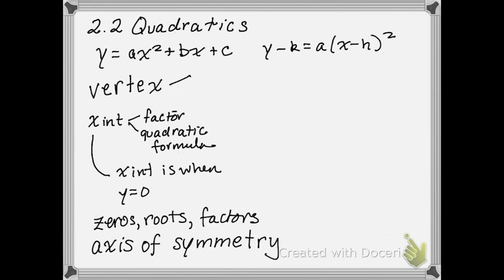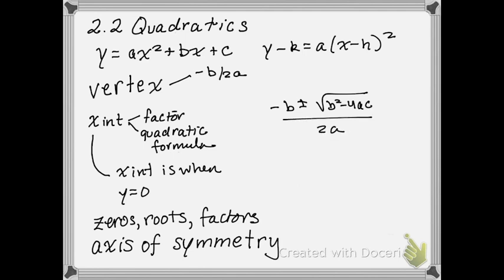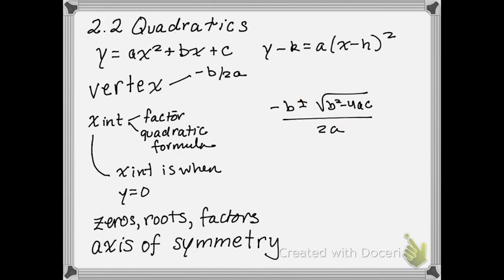There are two ways of finding the vertex. One is to use negative b over 2a — you might recognize that as a piece of the quadratic formula. Just notice that this piece, negative b over 2a, is what gives us the vertex of a quadratic. Let's go ahead and take a look at that.